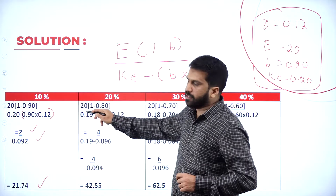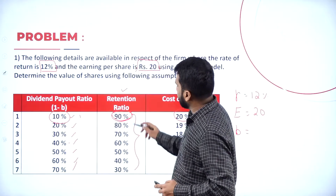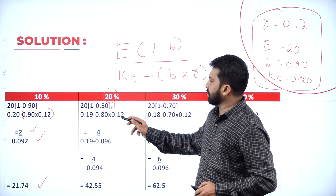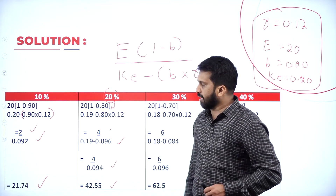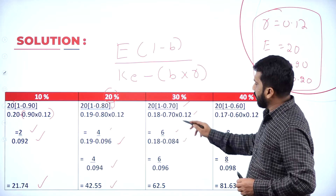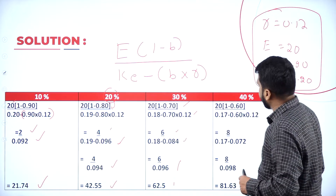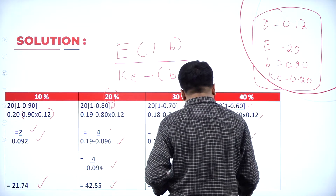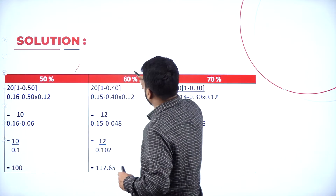Similarly, for the 30% payout case, you get 6 rupees in the numerator, and the final answer is 62.5. I am not explaining the concept in detail because you already know this. For 40% payout, same procedure applies, and the final answer is 81.63. We are done up to 40%. Now go back and apply for 50%, 60%, and 70%.